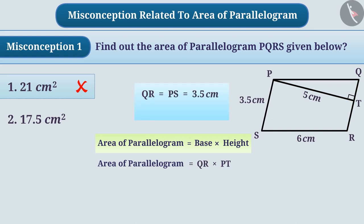PS equals 3.5 centimeters and PT equals 5 centimeters. Therefore, the area of the parallelogram is 3.5 centimeters multiplied by 5 centimeters, which equals 17.5 square centimeters. Option 2 is correct.